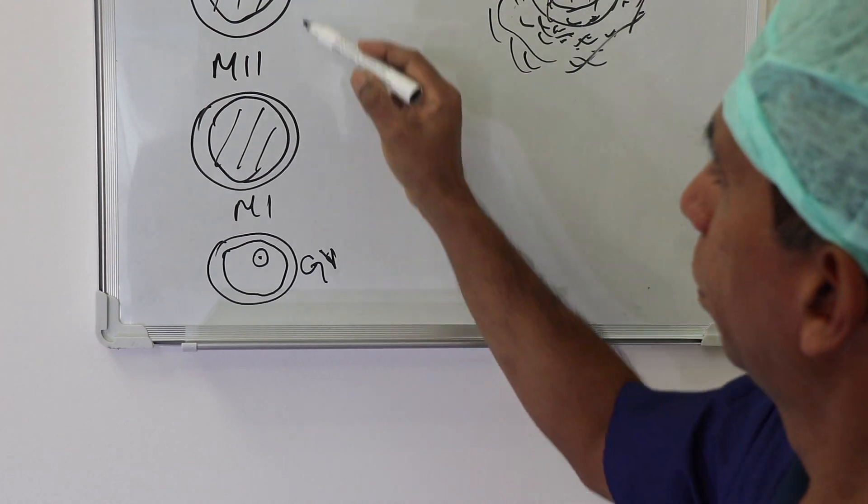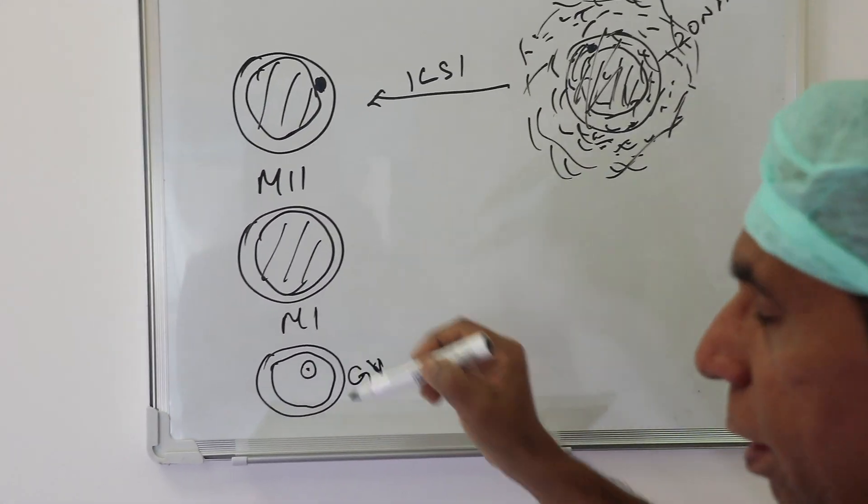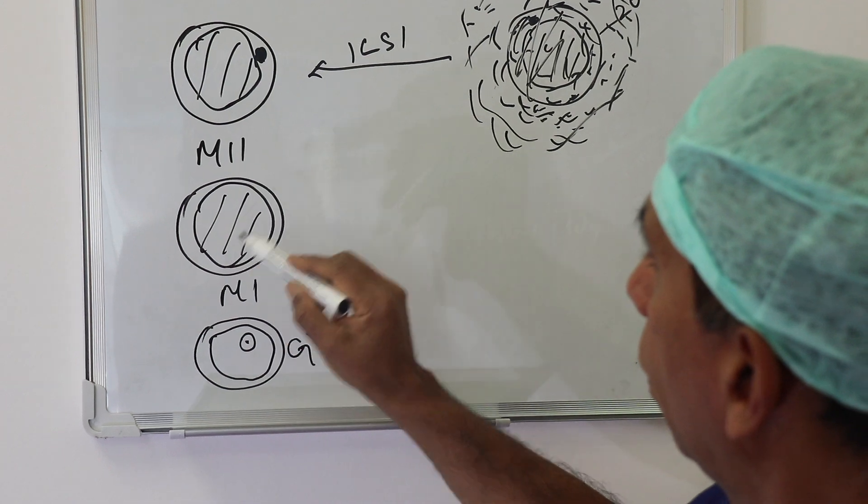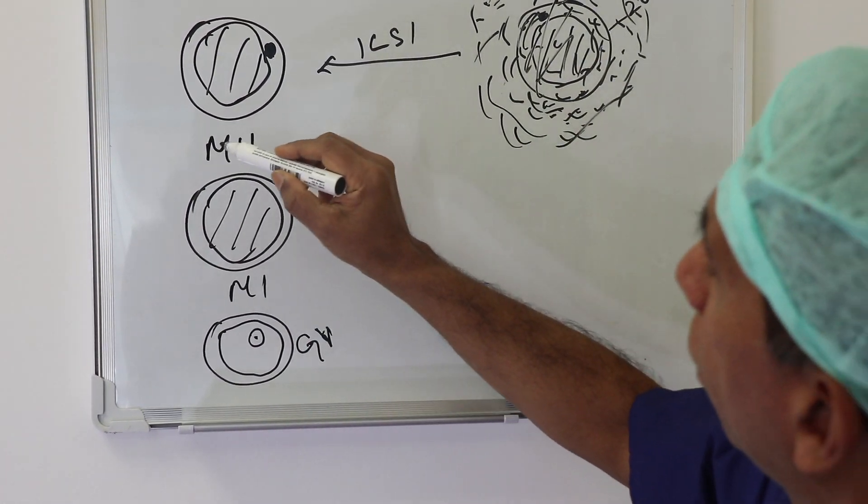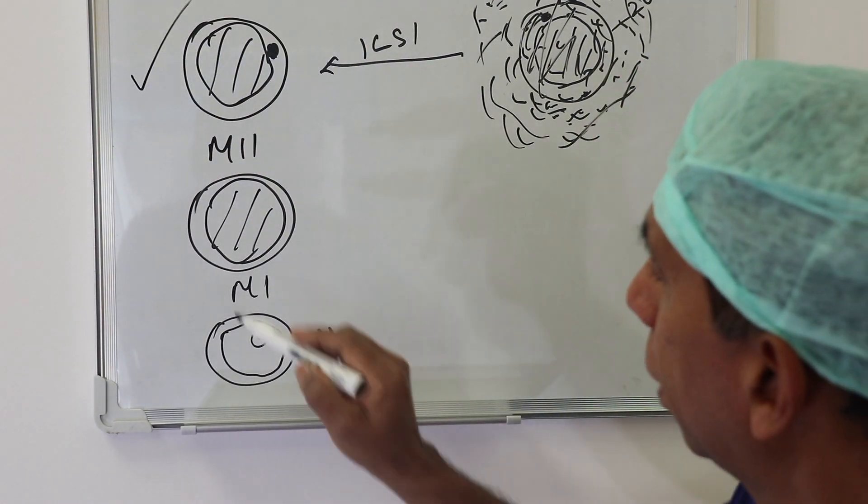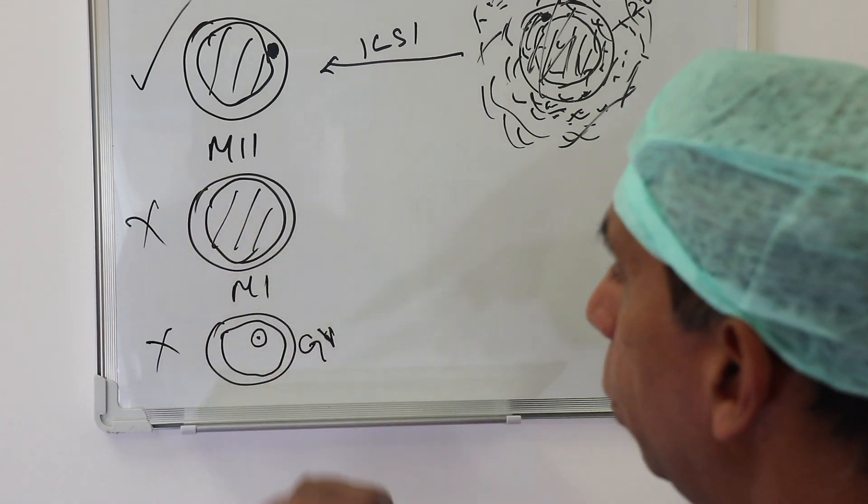So metaphase 2, metaphase 1, and GV. When we do ICSI, we can use only the metaphase 2 egg, inject the sperm, and we don't use the others.